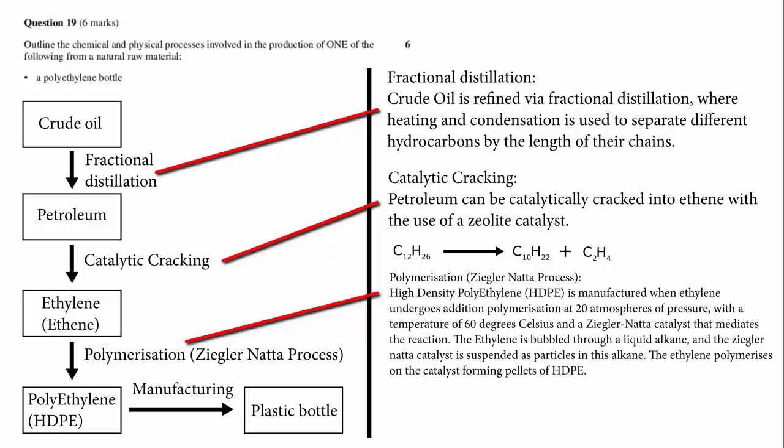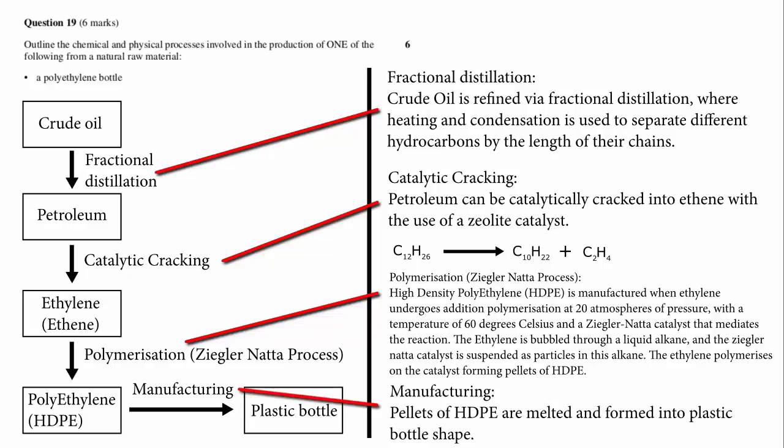Finally, we need to explain how the HDPE is formed into a plastic bottle, which is by melting the pellets of HDPE and molding them into shape. With a 5, 6 or 7 point question, you need to think about how you can answer the question comprehensively in order to get all of the marks. Because you don't know exactly what they will mark on, it's best to answer everything fully to cover every base.